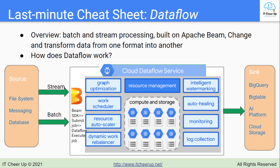You need to distinguish between the Apache Beam SDKs, which are used to create the pipeline, and the implementation execution framework used to execute the job. Each step of the pipeline performs a filter, group, transform, compare, join, etc. Transforms can be done in parallel. I will go through the key points on Dataflow's jobs, pipelines, components, and transform operations in the next video.